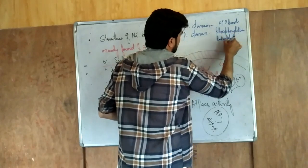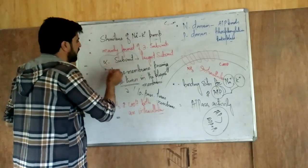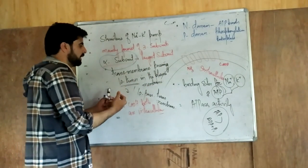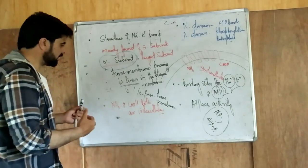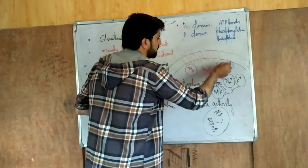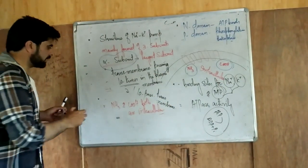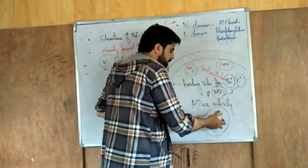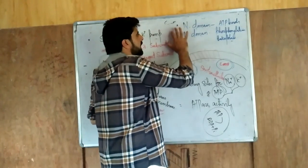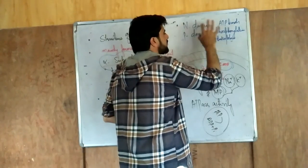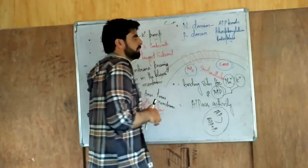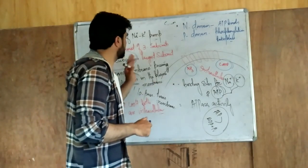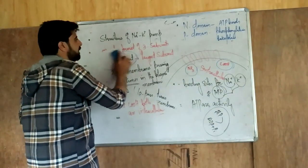The main function of the sodium-potassium pump is performed by the alpha subunit. To summarize: it is the largest subunit, a 10-pass transmembrane protein with alpha helical structure. Its amino and carboxyl groups are both intracellular. It has binding sites for sodium, potassium, and ATP, has ATPase activity, and has two domains — the N domain for ATP binding and the P domain for phosphorylation.